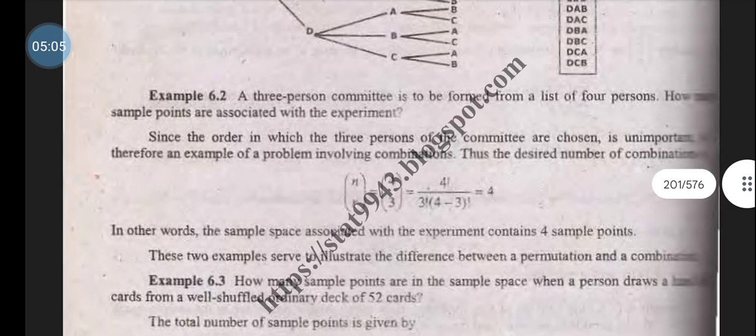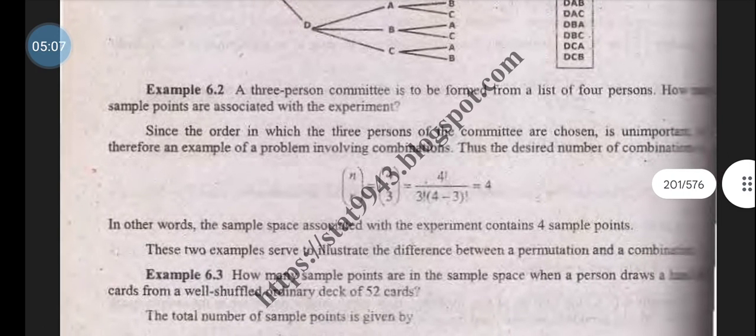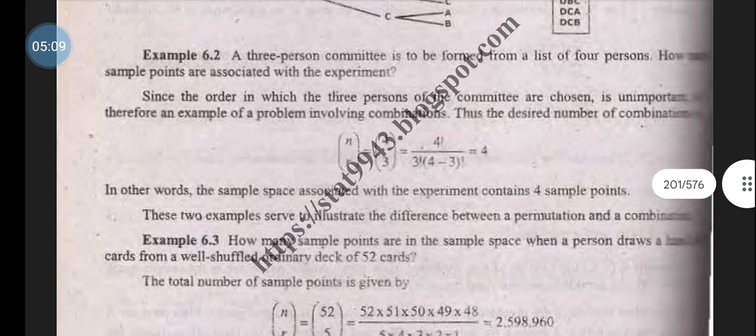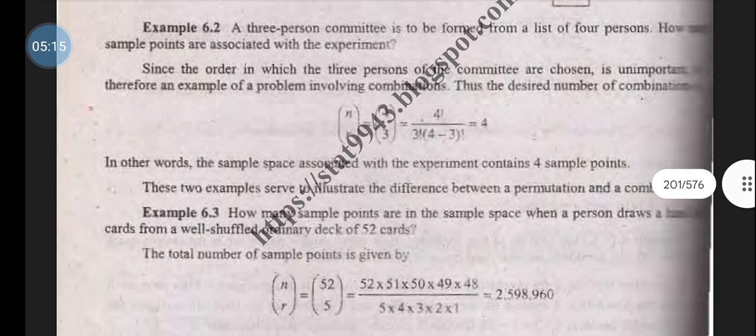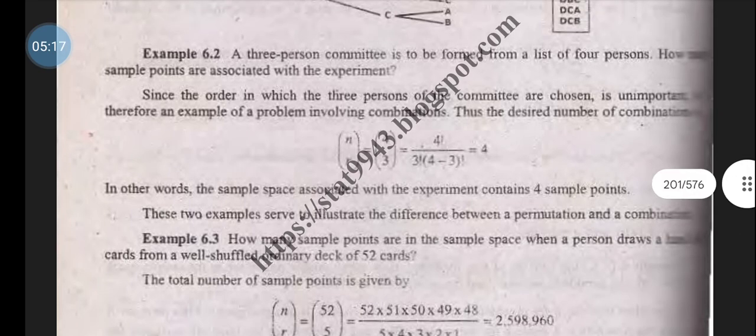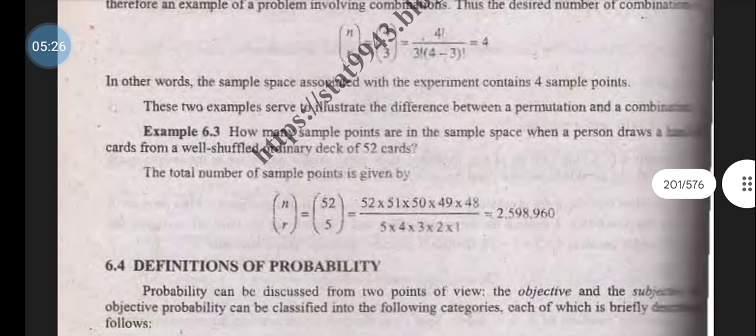Example: A three-person committee is to be formed from a list of four persons. How many sample points are associated with the experiment? nCr equals 4C3 equals 4! over (3! times (4-3)!) equals 4.